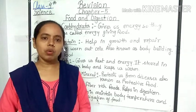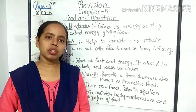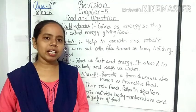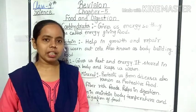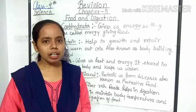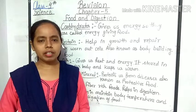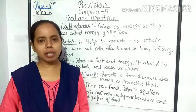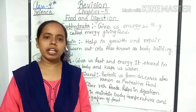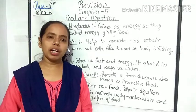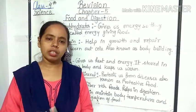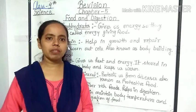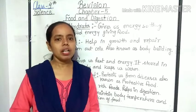So, how many types of nutrients are there? They are carbohydrates, protein, fat, vitamins, and minerals. Now let's know about these nutrients one by one.